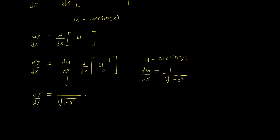Times the derivative of u to the negative 1 with respect to u — we're going to use the power rule, so the negative 1 comes down and the exponent is replaced: negative 1 times u to the negative 2, because subtracting 1 from negative 1 gives negative 2 in the exponent.